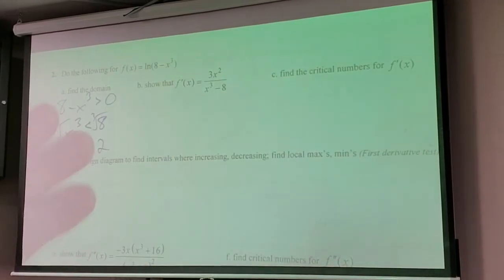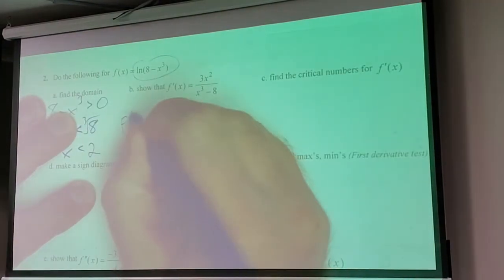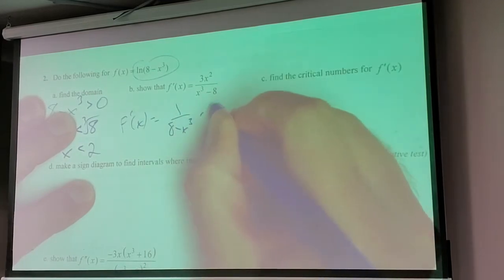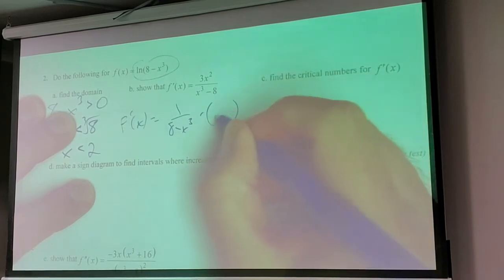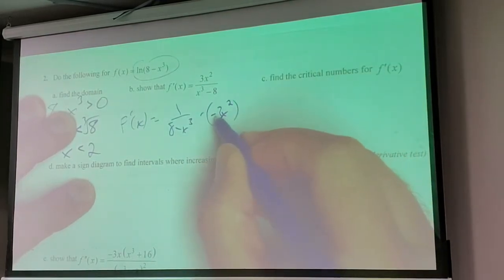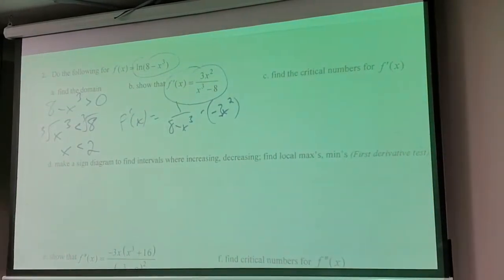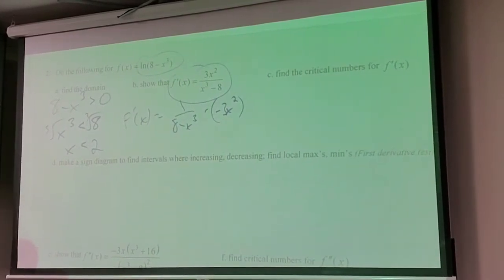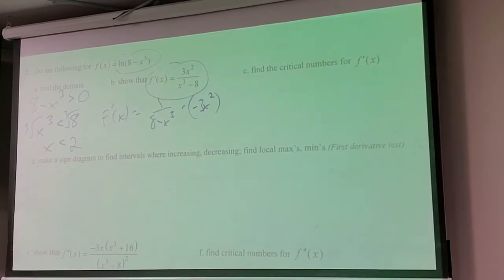This is pretty straightforward. The derivative of ln of something is 1 over that something, times the derivative of the inside, which is negative 3x². Bringing that negative down changes things around.